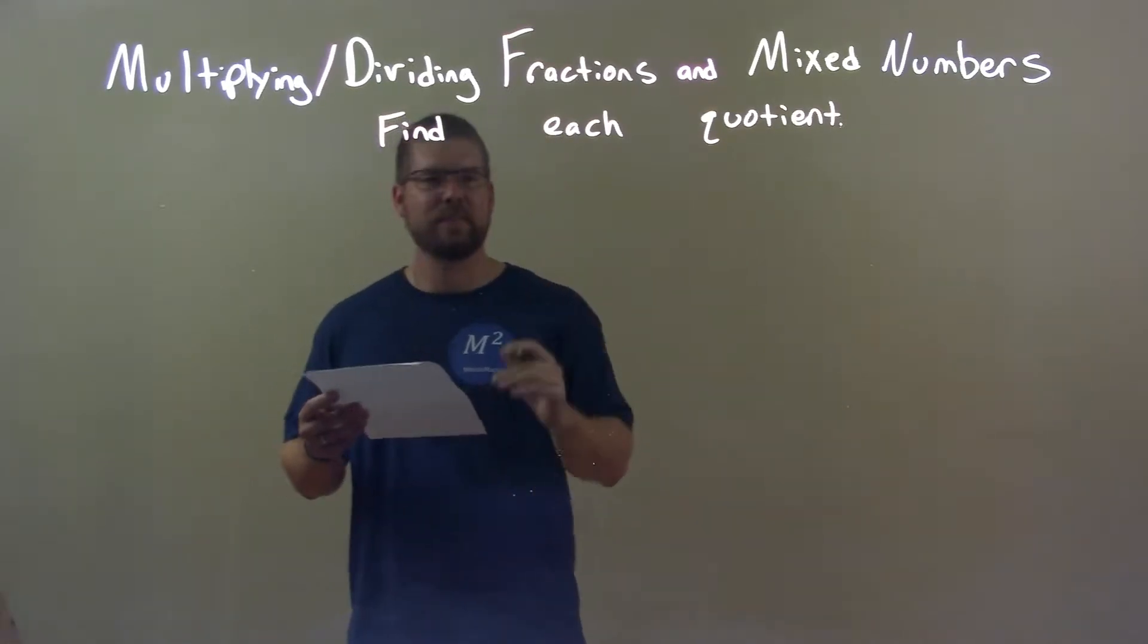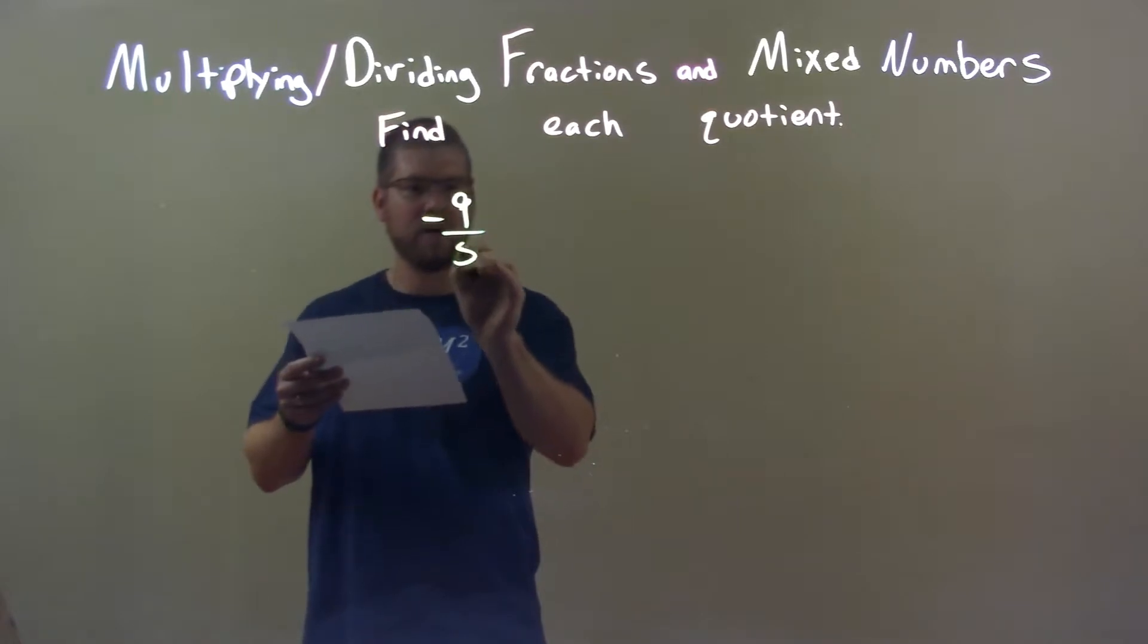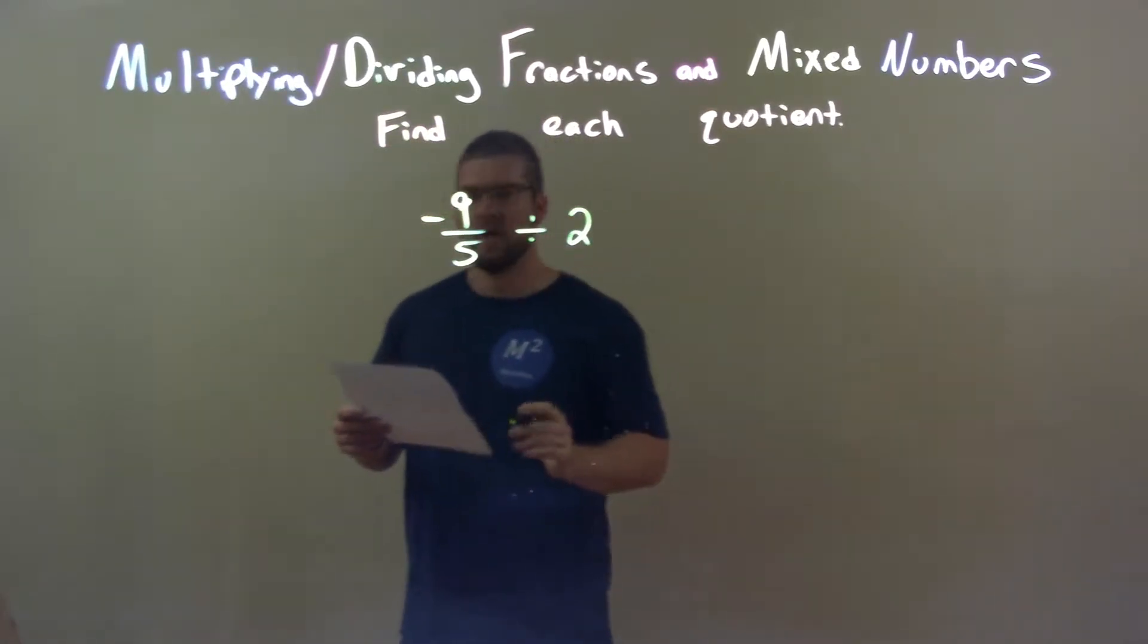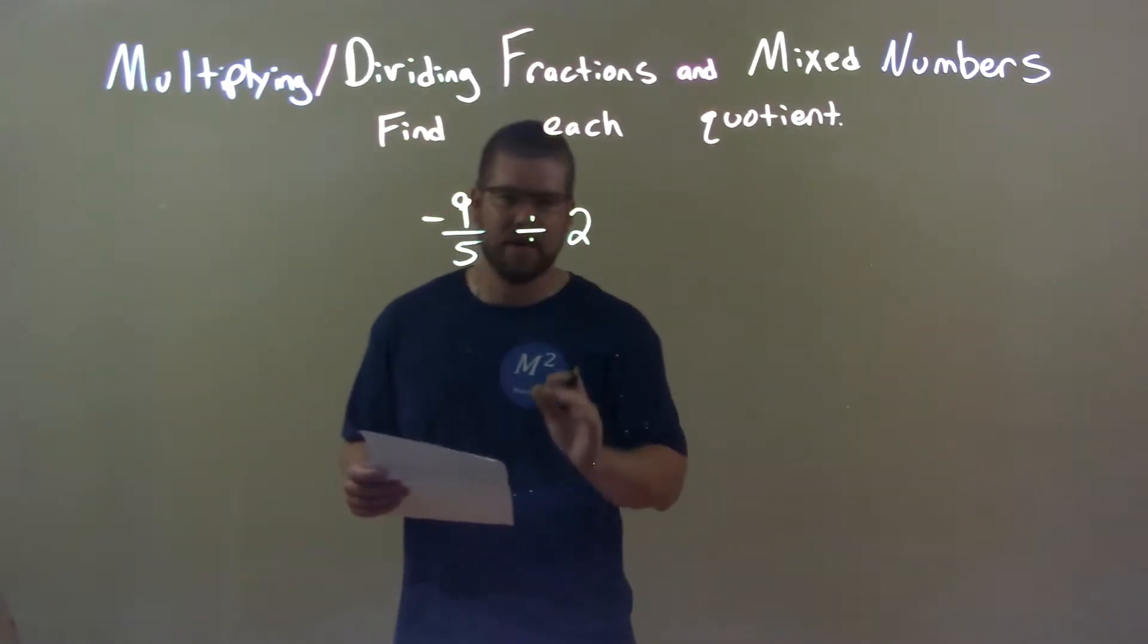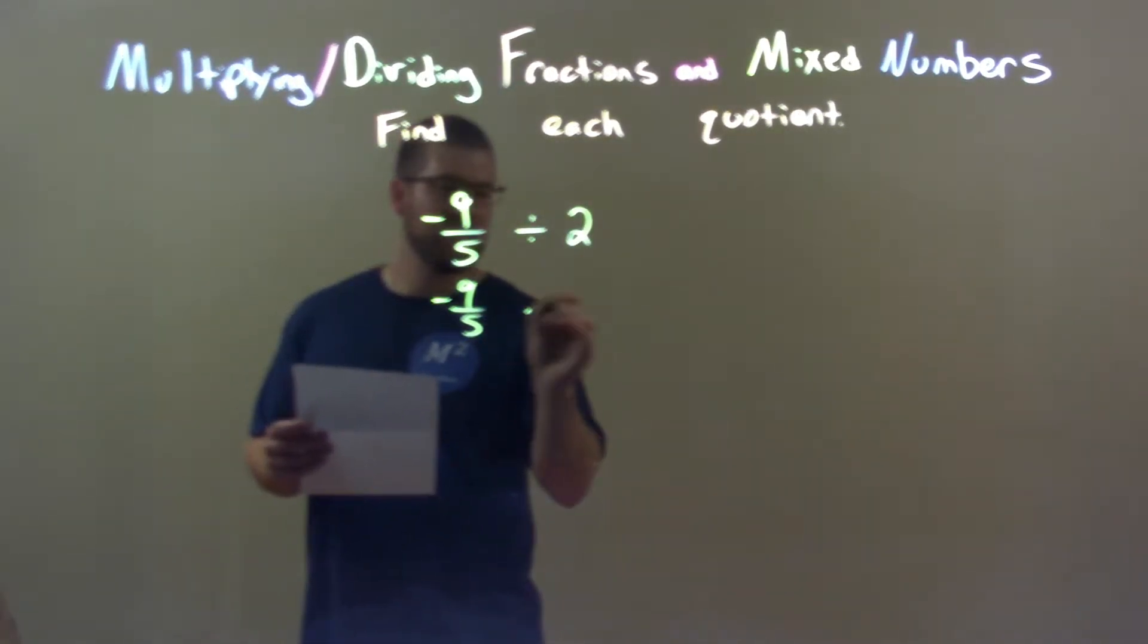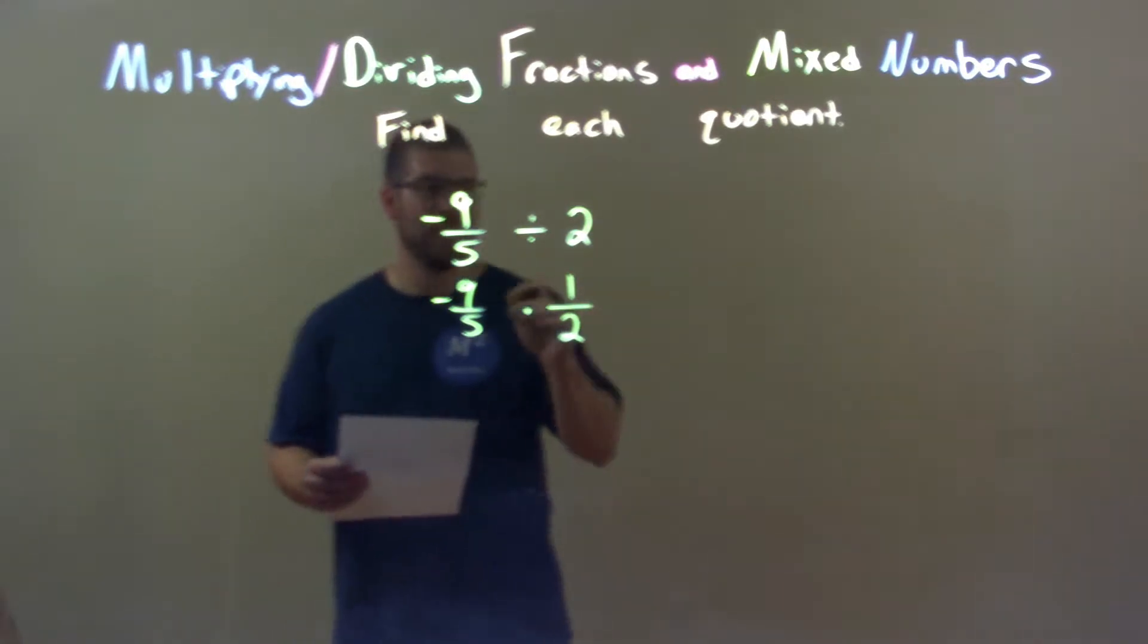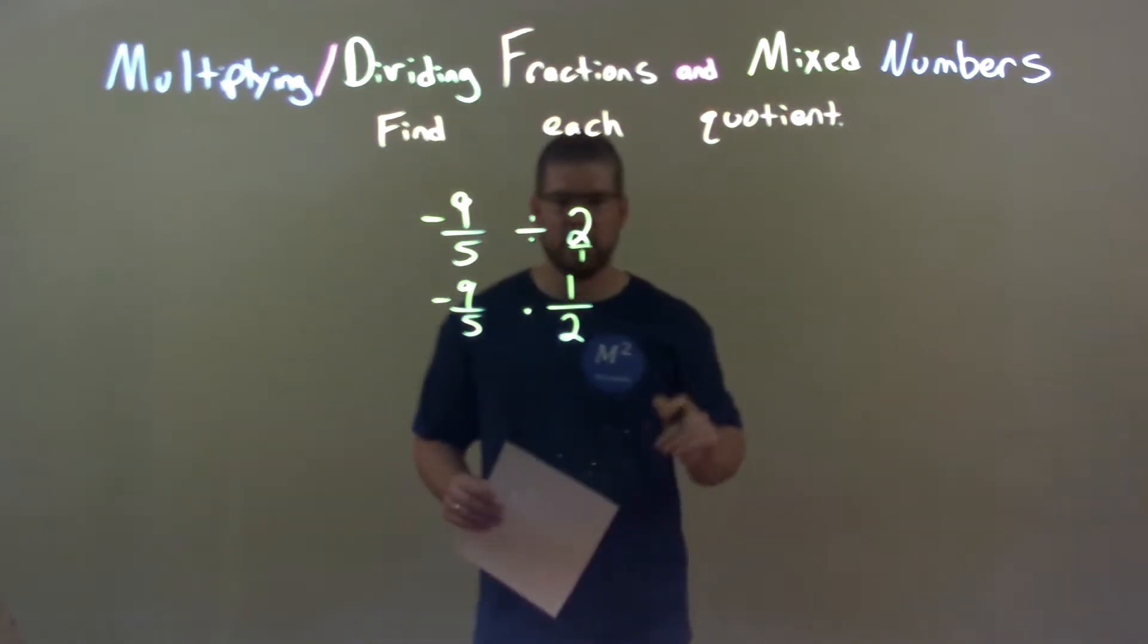So, if I was given these numbers, negative 9 over 5 divided by 2. So, negative 9 fifths divided by 2. Well, I don't like division. I prefer multiplication. So, with fractions, negative 9 fifths times—convert that divided by 2 to be multiplied by 1 half. We can do that, right? Because we know that's like 2 over 1 right there. Just flip it.